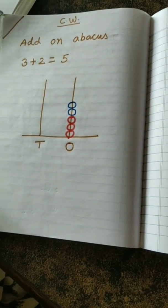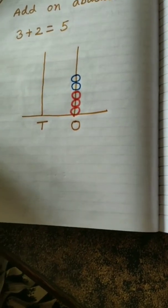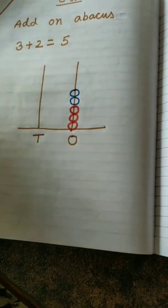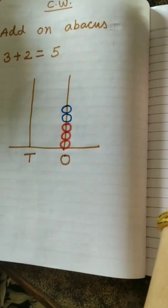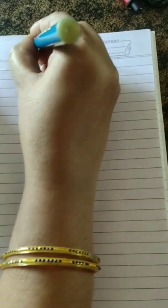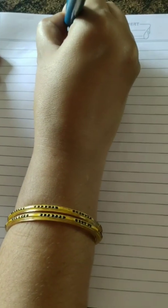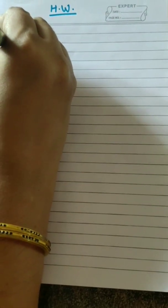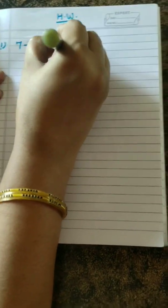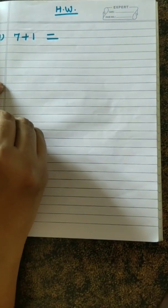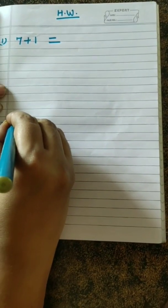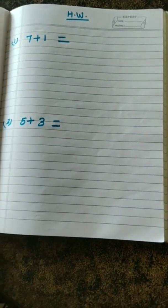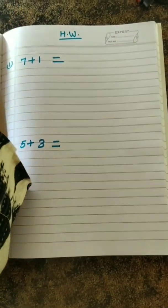Children, it is very simple now. Can you do it? Yes, you all will do it. Children, now I am going to give you some sums. You will do it in your copy, okay? Children, all this you have to add on your abacus. 7 plus 1 and then question number 2 is 5 plus 3. Got it, children? Very good. You all will do it.